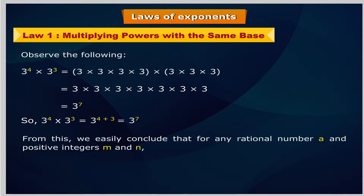From this, we easily conclude that for any rational number a and positive integers m and n, a raised to the power m multiplied by a raised to the power n equals a raised to the power m plus n.